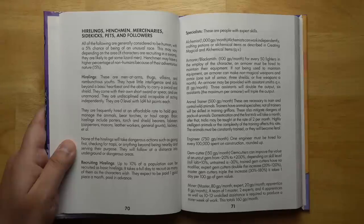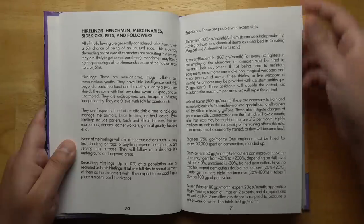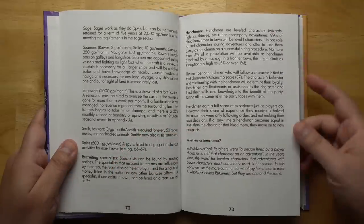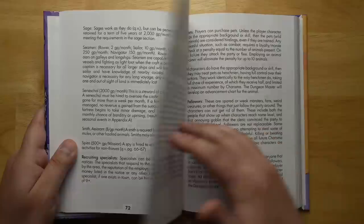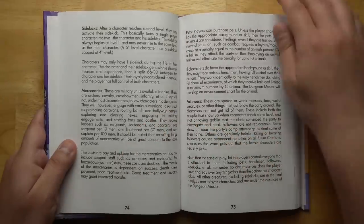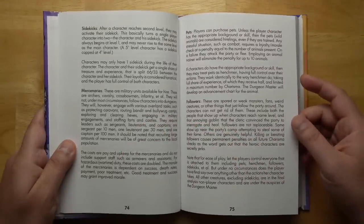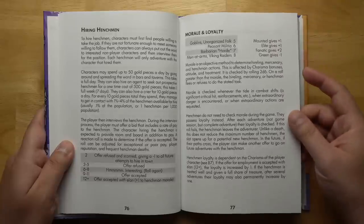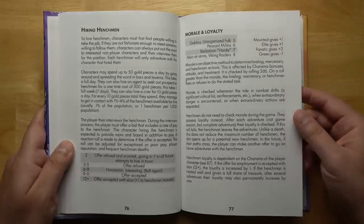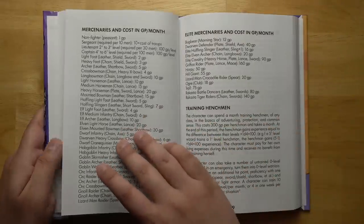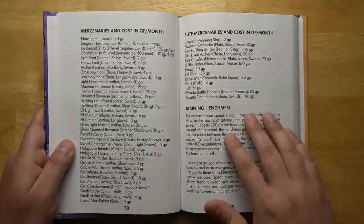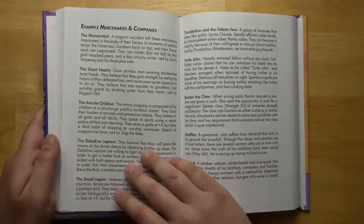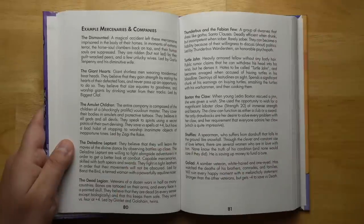There's a whole section here on hirelings, henchmen, mercenaries, sidekicks, pets, and followers. A lot of this reminds me of the stuff in AD&D, but seems more streamlined and simplified. It has general rulings for how you handle most stuff, including morality and loyalty for henchmen, the different costs of different types of mercenaries in gold pieces per month, how you might train henchmen, and example mercenaries and companies, a lot of which are full of flavor.